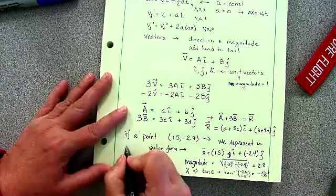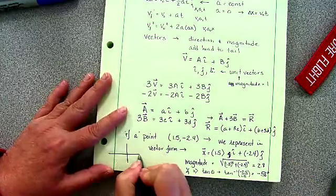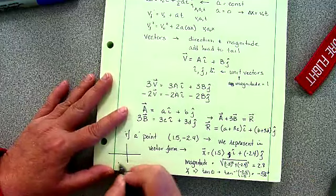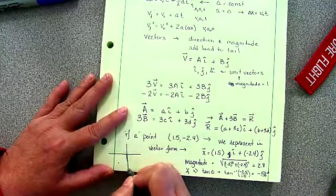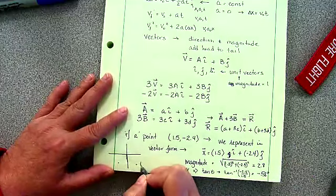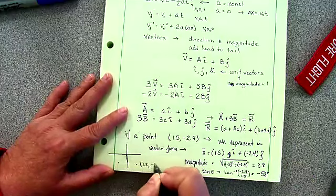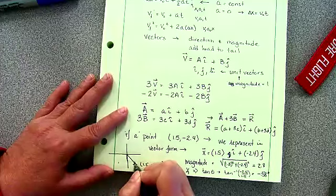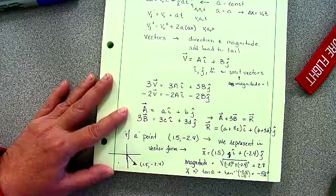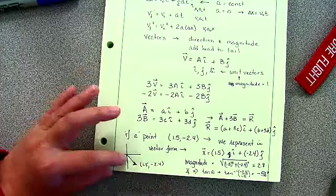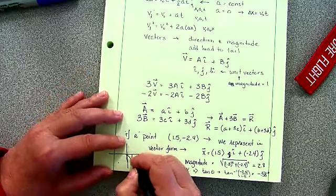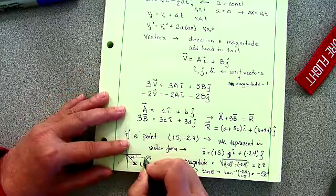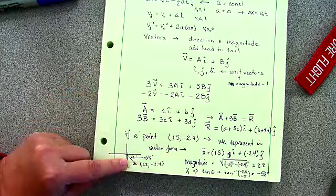This gives me a negative 58 degrees. And if I'm drawing my picture, this is my negative 2.4, this is my point that's 1.5 negative 2.4. This is my vector that I just drew, and my opposite is this side, so the angle that I just figured out is this angle right here, that's a negative 58 degrees, and that's the angle that I just calculated.